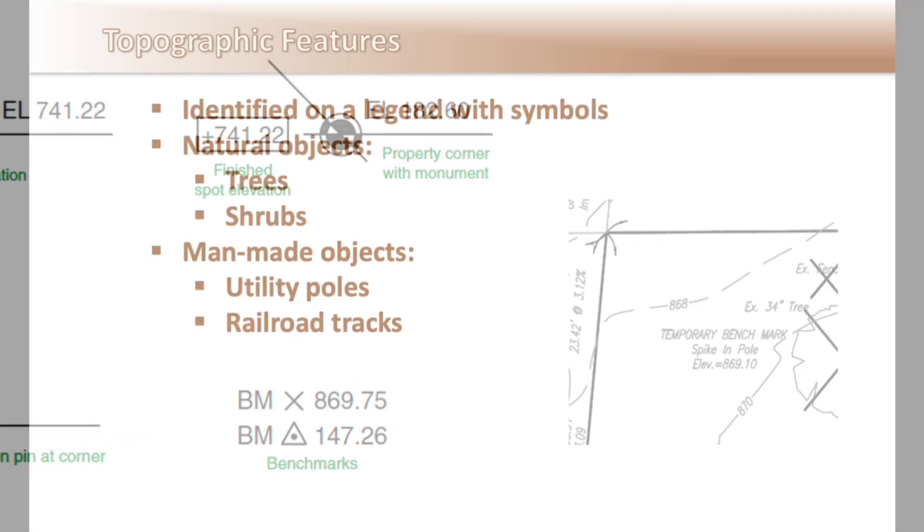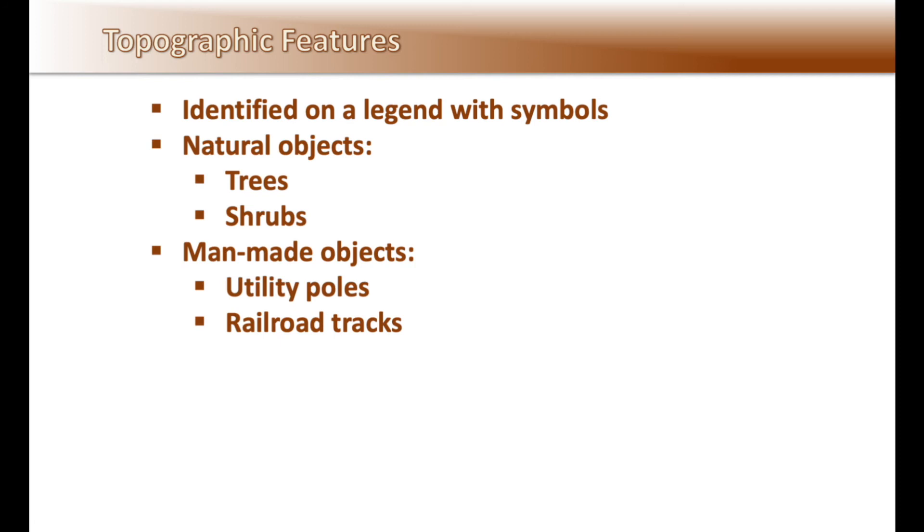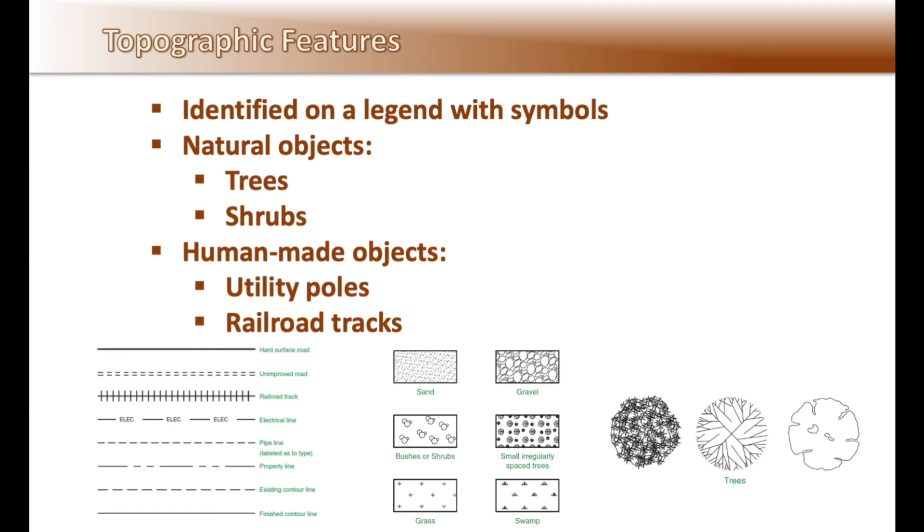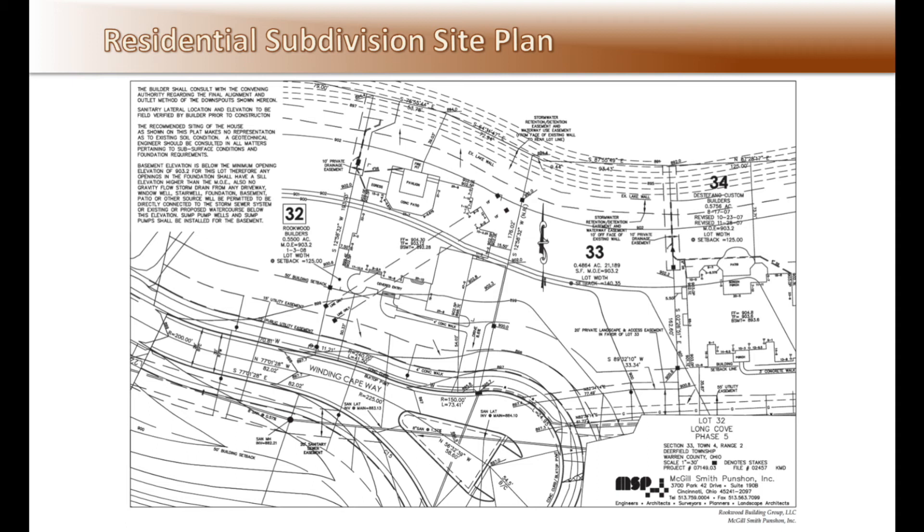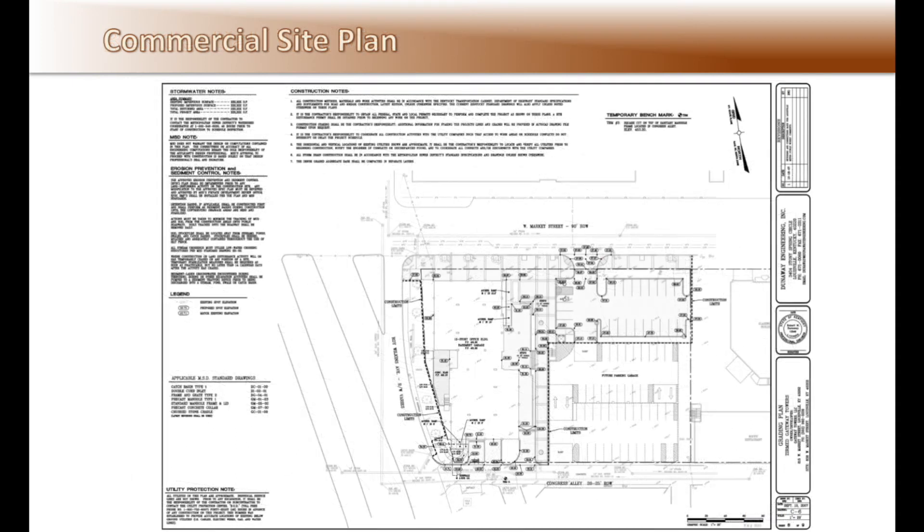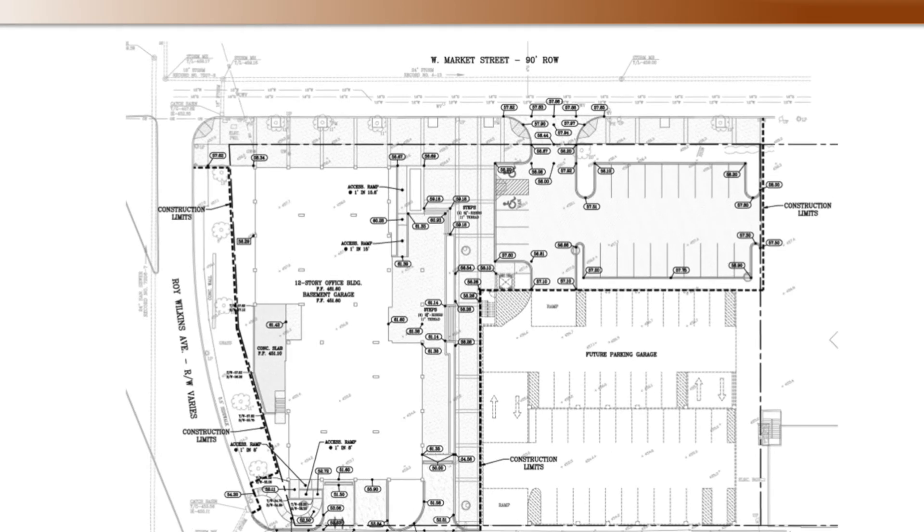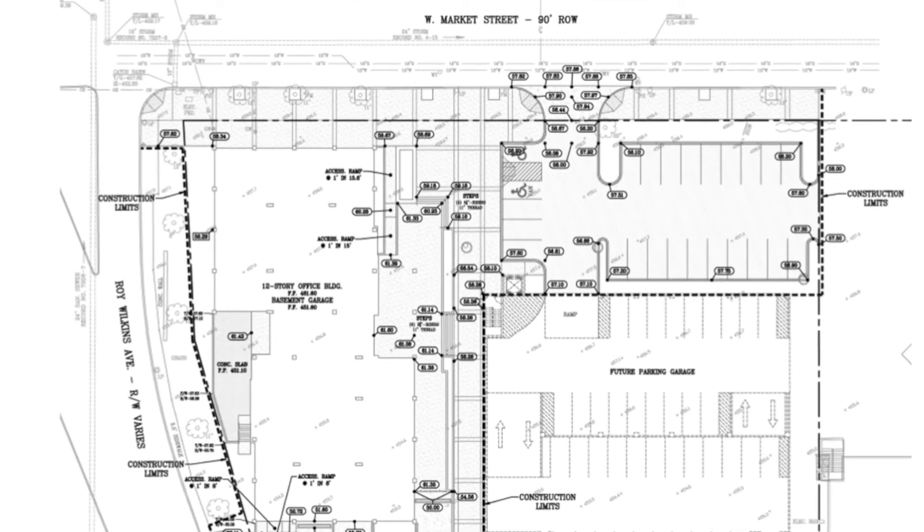Typical symbols used to reference benchmarks would look like this, or the spike in the pole as noted on this site plan. Site plans use symbols like we discussed in Unit 4 to illustrate trees, shrubs, utility poles, railroad tracks on the site plan. These symbols can usually be found in a legend. Here is an example of a residential subdivision site plan. As you can see, the plan can get very detailed with lots of information. Here is a commercial site plan of a high-rise building on a tight lot. Note the civil engineer is using spot grades instead of contour lines to define elevations.